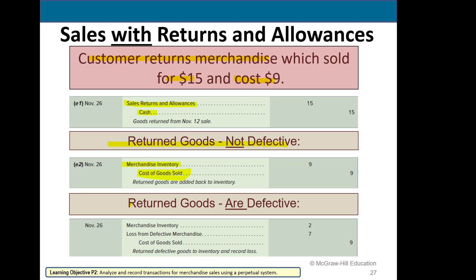But if the returned goods are defective, we have to write the cost down to what we could sell it for. If it's only worth $2, we put it back in merchandise inventory at $2. We debit a loss account — similar to an expense account — which reduces our net income. Here that loss is $7, and we reduce cost of goods sold for the full $9.